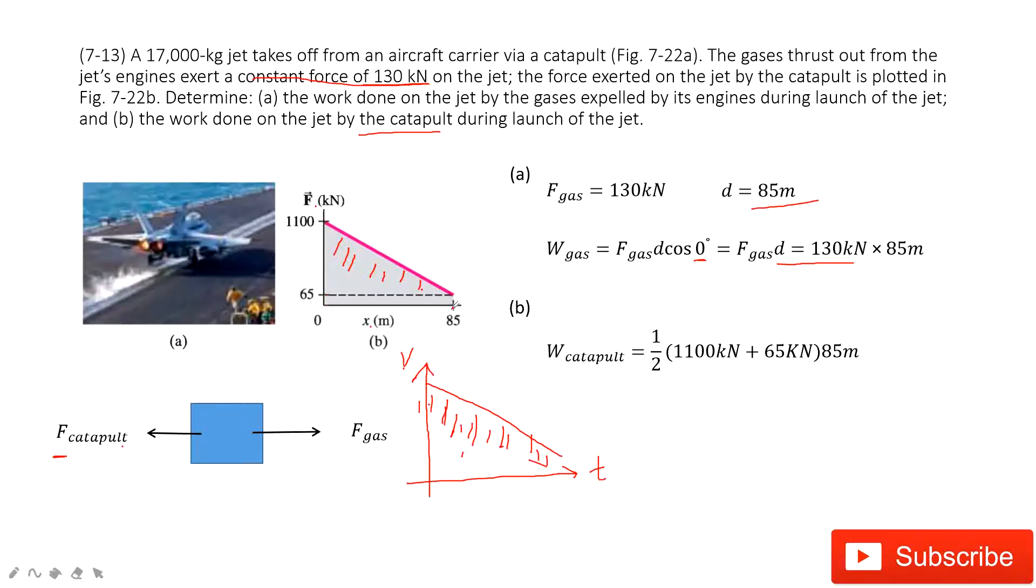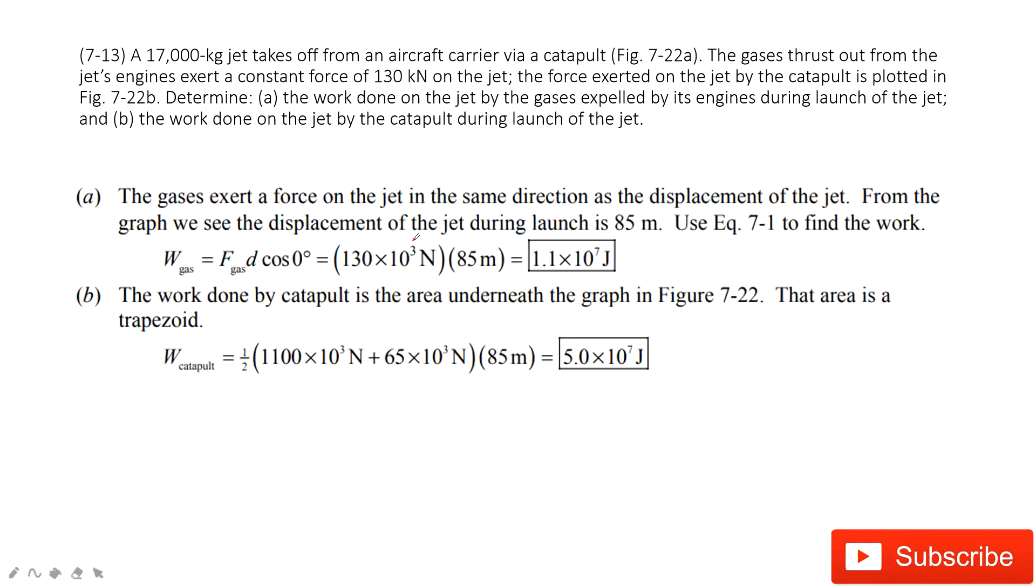So we just find these areas. Super easy, you can see. This is one half, this side 65, this side 1100, and then this side 85. So then after you input the numbers inside, you get the final answer. Thank you.